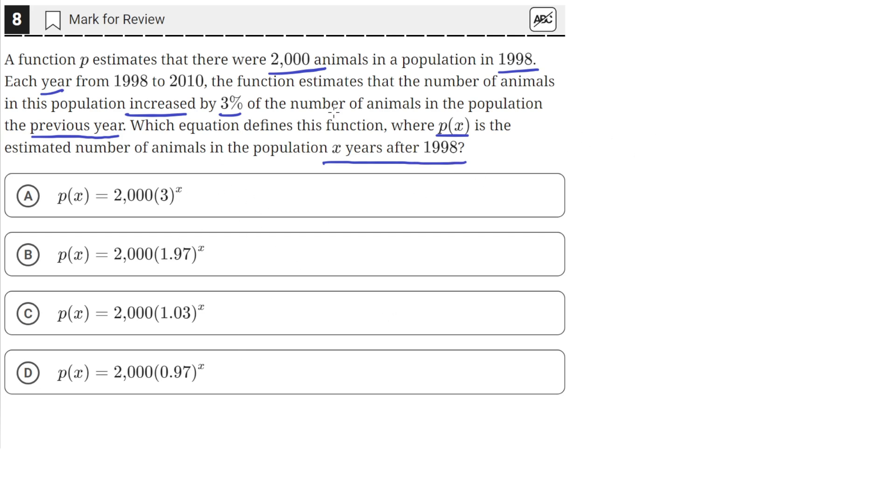Okay, so we need to construct an exponential function that models this situation. So we have p of x, which gives us the population p for a given year x after 1998. So we're told that the initial population is 2,000. So in an exponential equation, the initial amount is the coefficient that we multiply out in the front. So you can see in all the answer choices there's a 2,000 in the front.